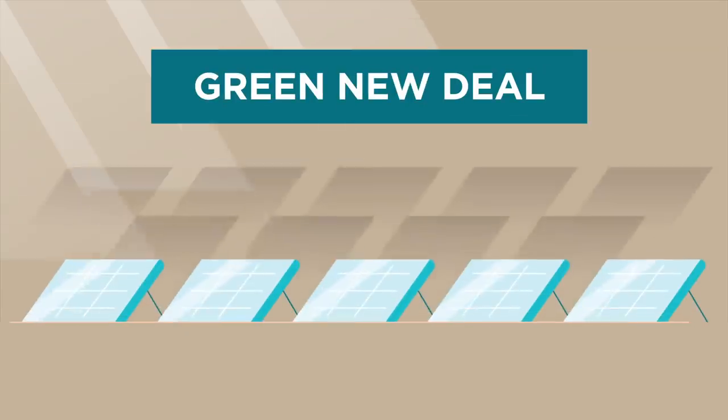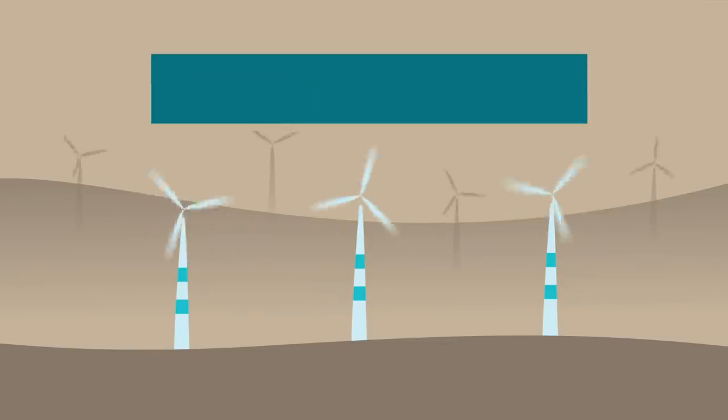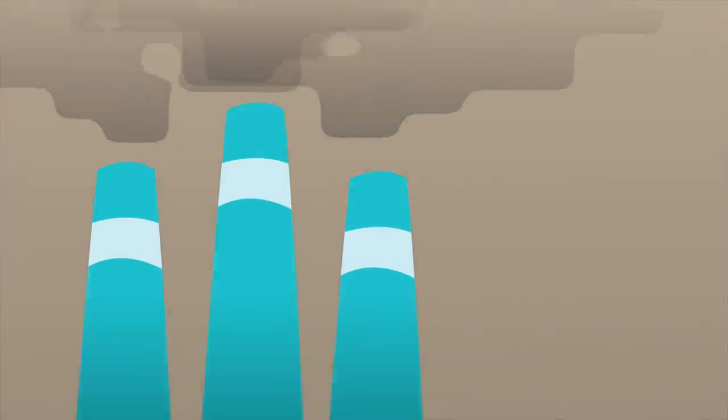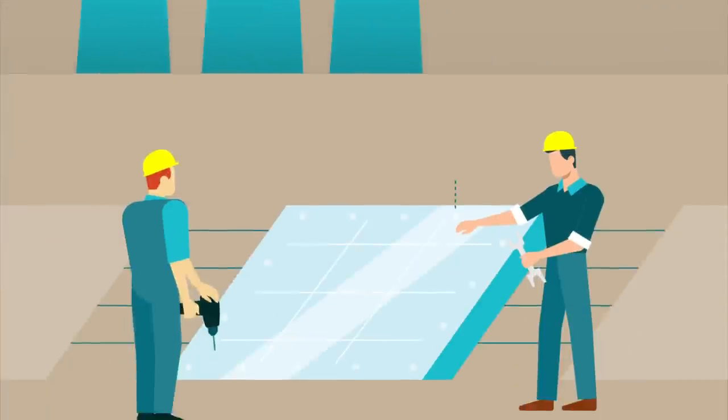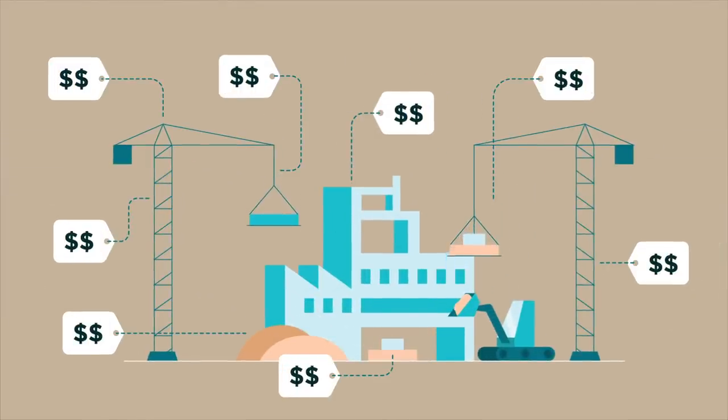Proponents of the Green New Deal want to shift all electricity production to renewable energy sources in just 12 years. Reducing carbon emissions to diminish global warming is a noble goal, but converting entirely to renewables in that time frame wouldn't just be expensive, it would be impossible.